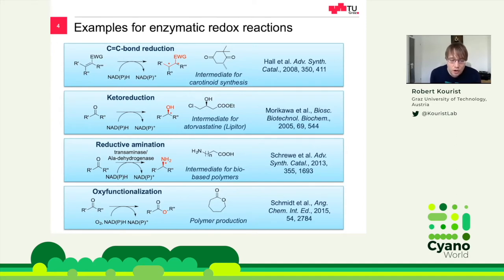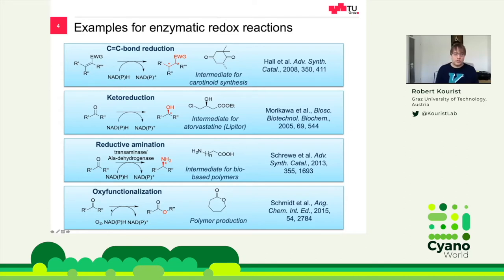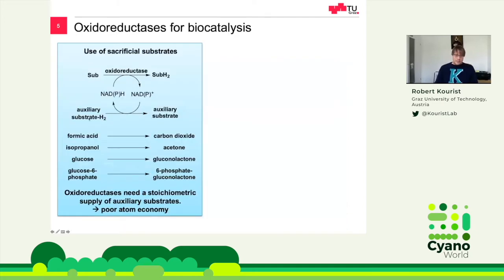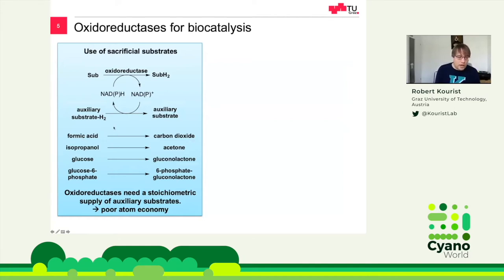All of these reactions have in common that they need redox cofactors. These are reactions where we transfer electrons between molecules, and nature does this with redox cofactors. We always consume one molecule of NADPH, sometimes also pyridoxine, and then produce the oxidized version. This cofactor is very expensive — a kilogram costs several thousand euros. Therefore, a second reaction is used to reduce this cofactor again. This can be done in a cell or in a cell-free system. For instance, we can use formic acid to release carbon dioxide, or isopropanol to produce acetone.